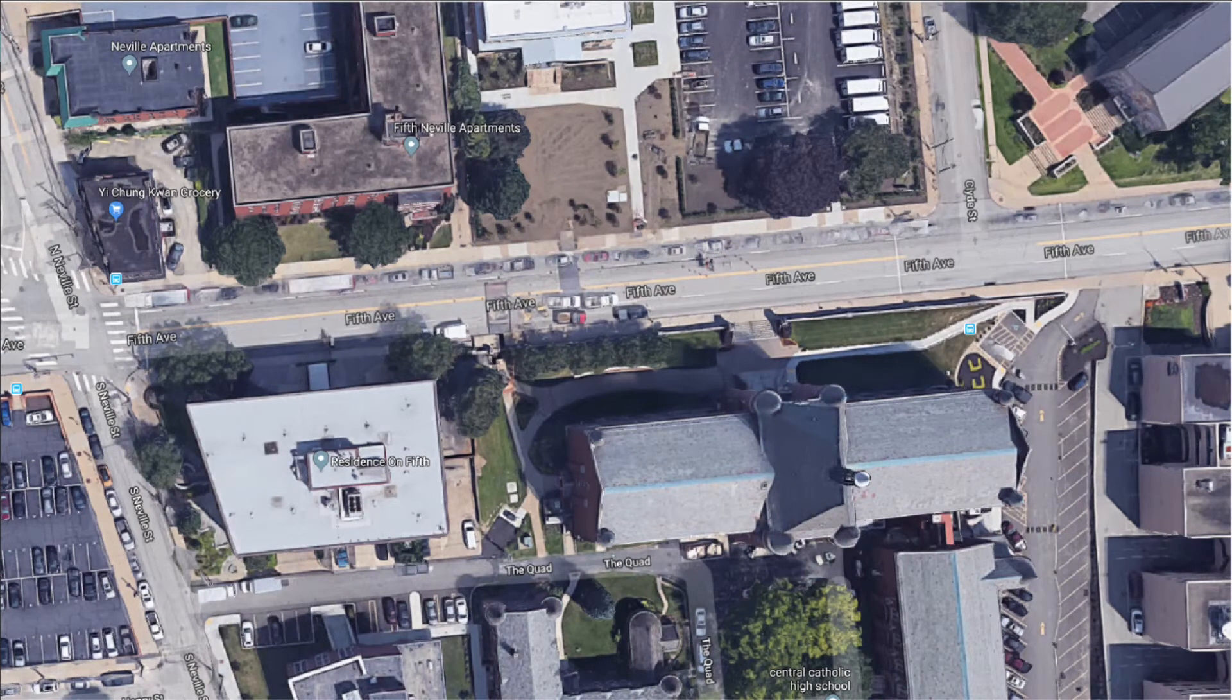This type of map can be constructed from a sequence of semantically segmented street view images using structure from motion and multi-view stereo algorithms. But this is not the focus of this course. So for our little piece of a city, the map could look something like this.